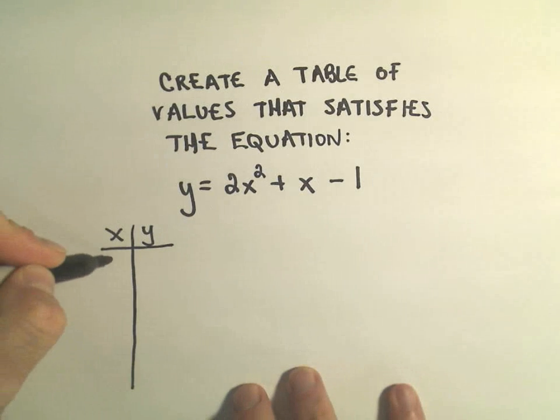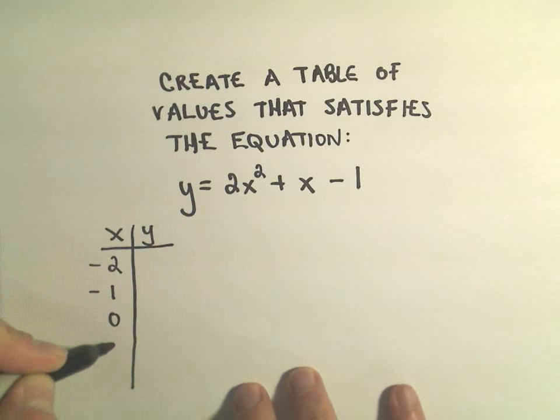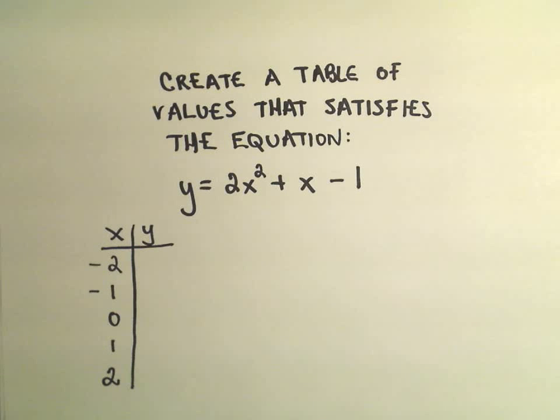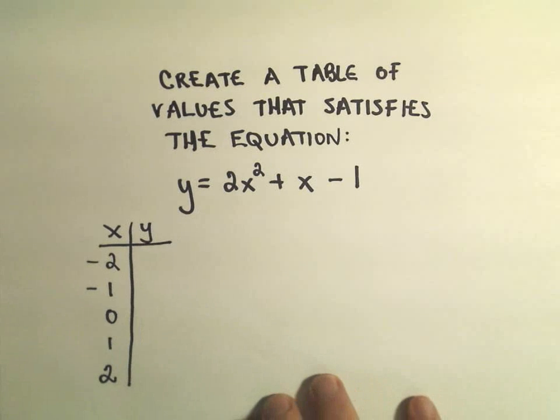So maybe just to plug in a couple, maybe I'll plug in negative 2, negative 1, 0, 1, and 2, and hopefully by doing this I'm going to get a basic idea as to what the graph looks like.